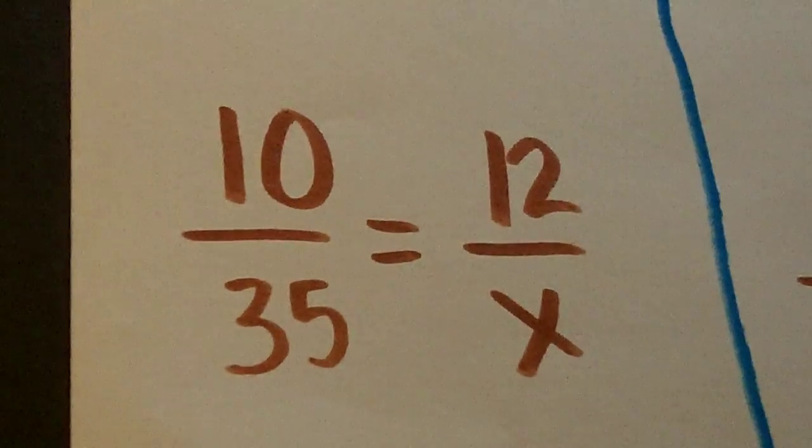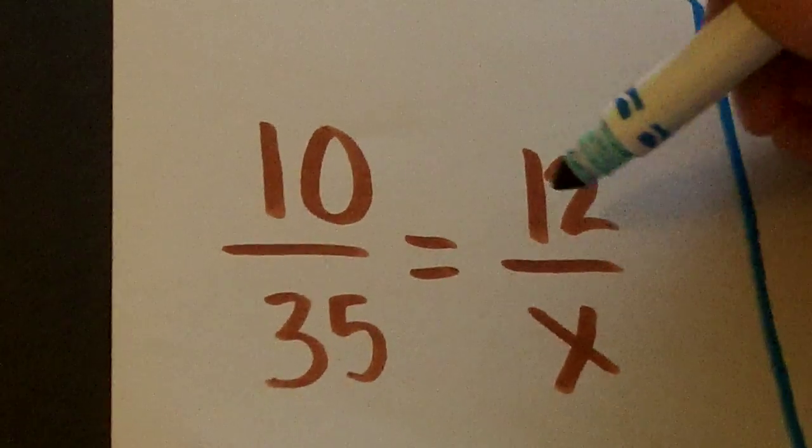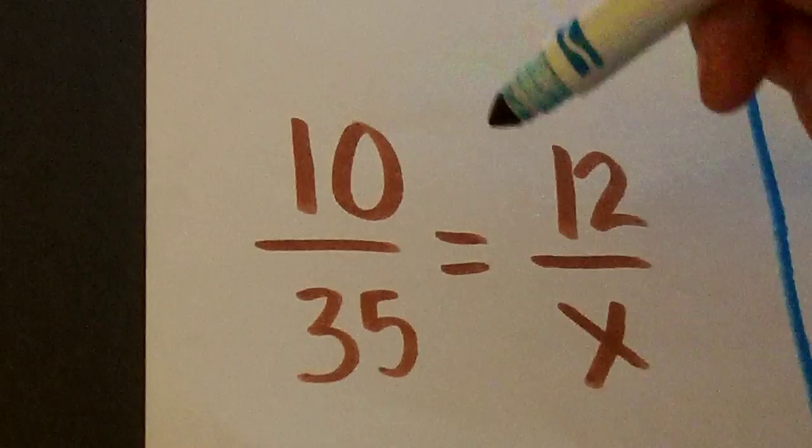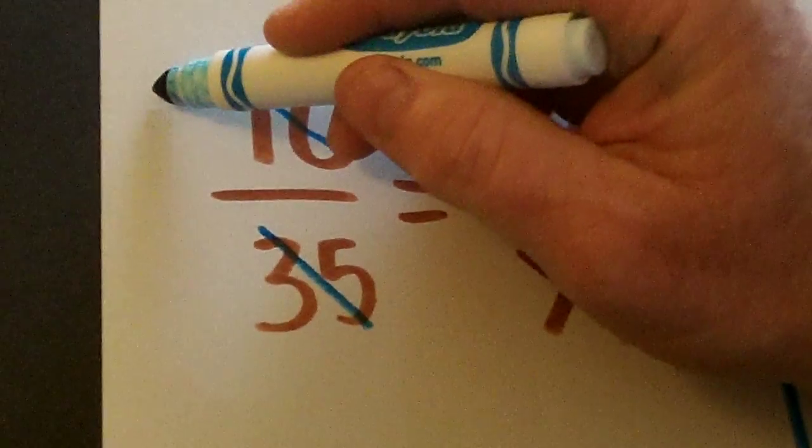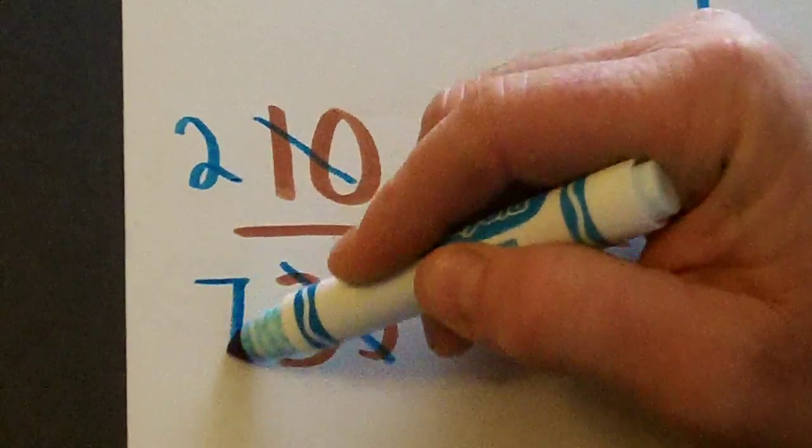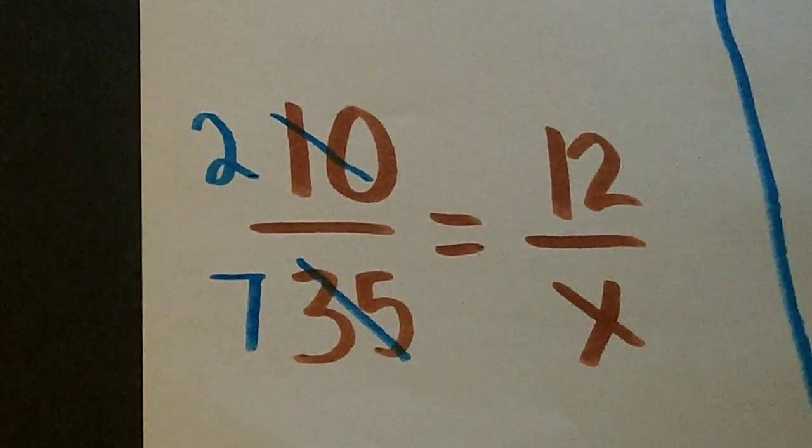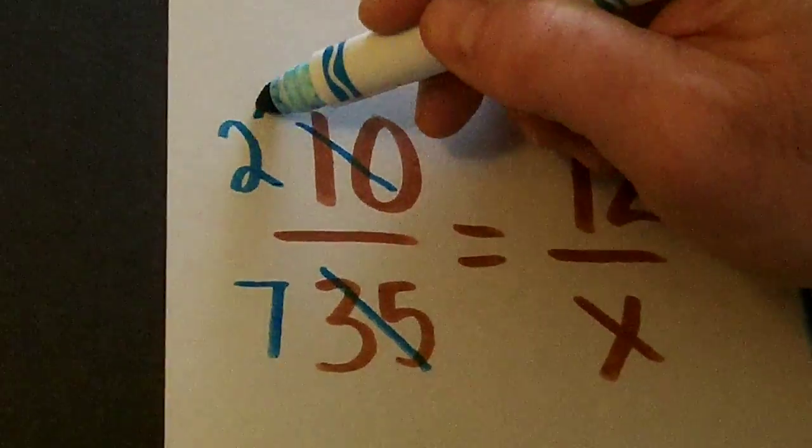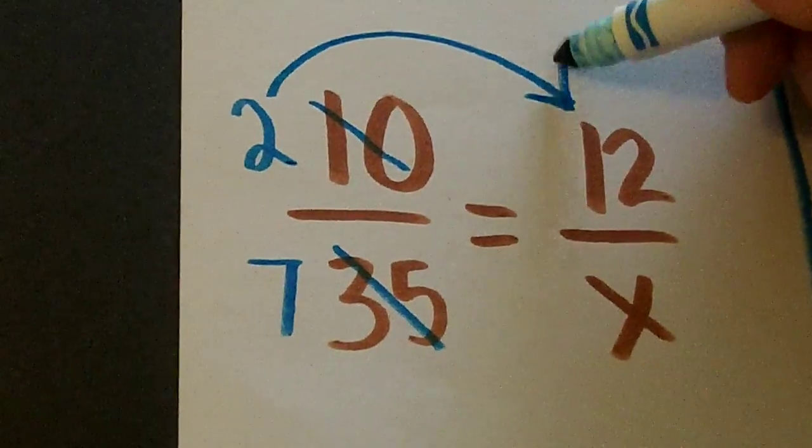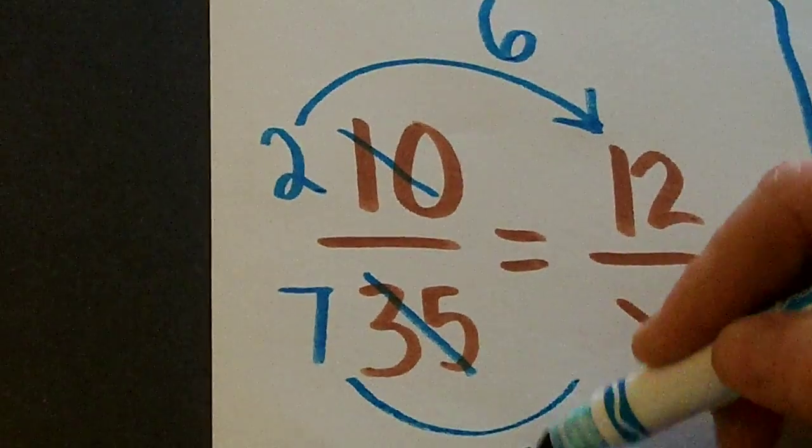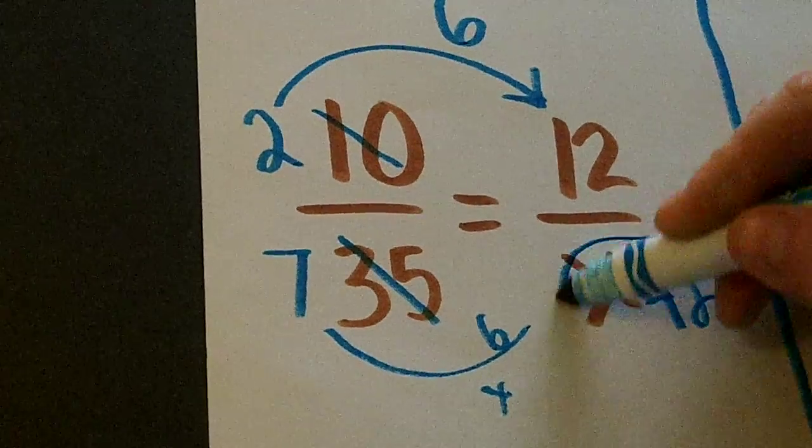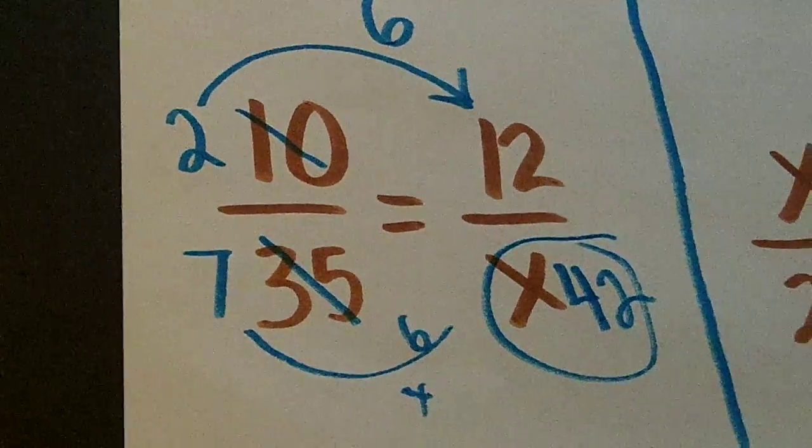This one is a two-step one. Let's go ahead and say that 5 goes into these 2 times 5, 7 times 5. Now watch this. 2 times what is 12? 6. 7 times 6 is 42. Is that pretty easy?